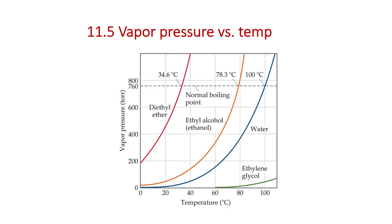This slide compares a couple of things. Looking at 760 torr, we can see the normal boiling points of a few different substances: diethyl ether, ethyl alcohol, and water. Ethanol boils at about 78°C, water at 100°C. Diethyl ether, even though it's bigger and has more dispersion forces, loses the hydrogen bonding force of attraction, so its normal boiling point is about 35°C.